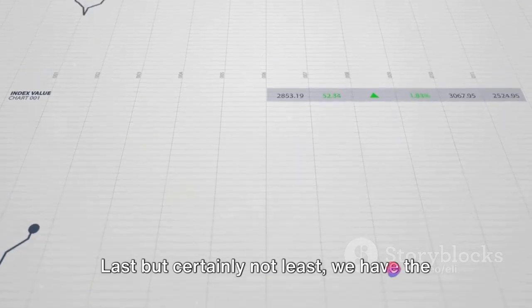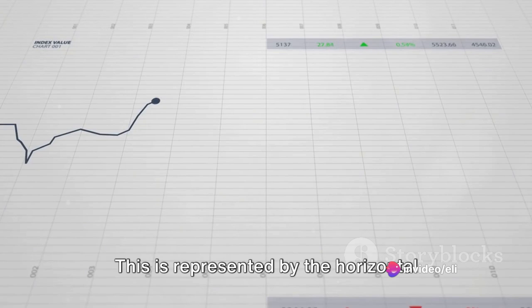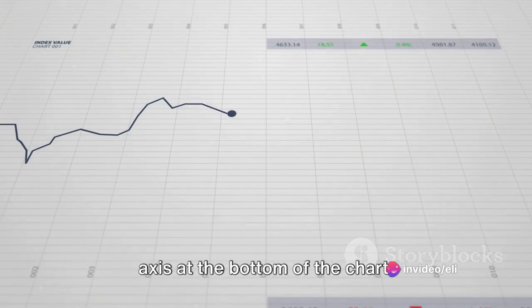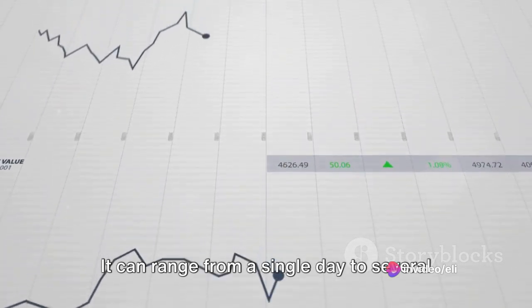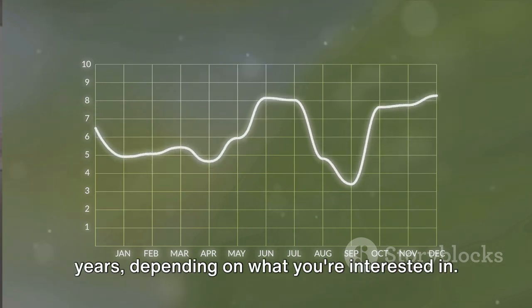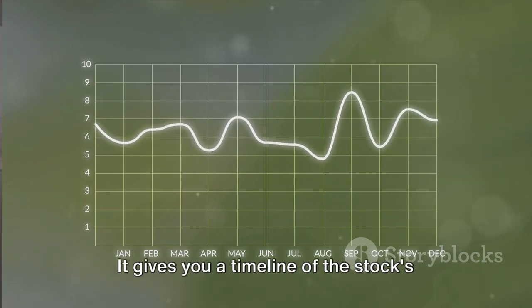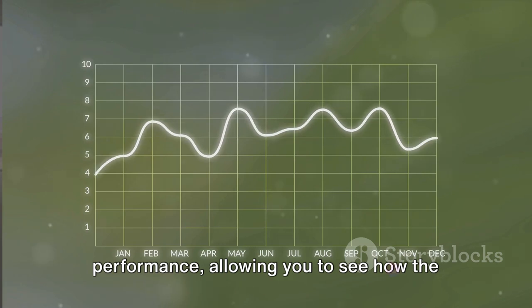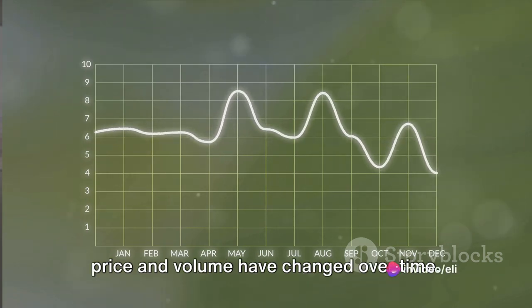Last, but certainly not least, we have the time period. This is represented by the horizontal axis at the bottom of the chart. It can range from a single day to several years, depending on what you are interested in. It gives you a timeline of the stock's performance, allowing you to see how the price and volume have changed over time.